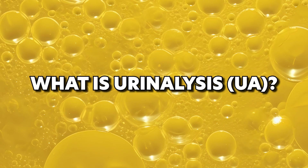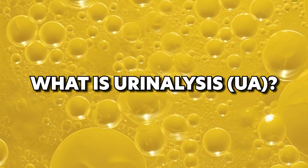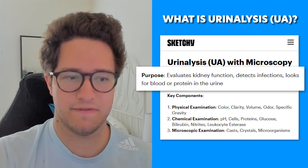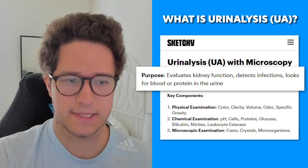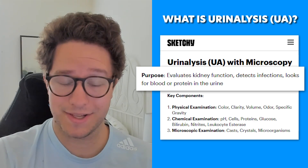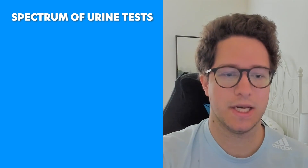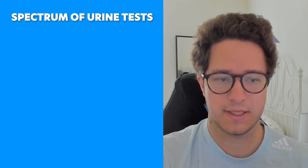What is a urinalysis, or a UA? This test is used to check kidney function, detect infections, and look for blood or proteins in the urine. Not all UAs are created equal. There's actually a spectrum of urine testing, and you can choose one depending on your needs.